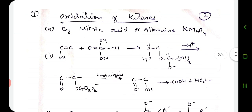Oxidation of ketones: ketones contain a carbonyl oxygen, and to oxidize them, different oxidation reagents are required. The C-C bond, which is between carbon and carbon as well as bonded to the carbonyl group, is broken, and the corresponding acids are obtained.